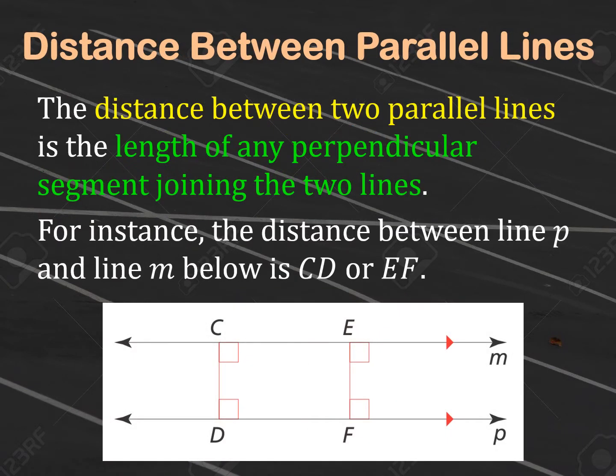Today we're looking at the distance between two parallel lines. That distance is the length of any perpendicular segment joining the two lines. If you take a look at lines M and P, to find the distance between them you can use the length of segment CD or segment EF. Parallel lines are always separated by the same distance, and you are going to look at the length of any perpendicular segment — which means you're going to have to take the negative reciprocal slope of the original lines.